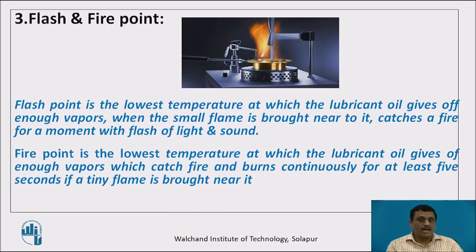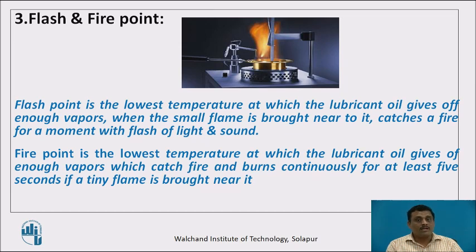The third property is flash and fire point. This property is not related to lubrication but is related to selection of lubricant and safety. The flash point is the lowest temperature at which the lubricant oil gives enough vapors, and when a small flame is brought close, it catches fire for a moment with a sound. The fire point is the temperature at which the formed vapors catch fire continuously. Generally, fire point is more than flash point by 5 to 10 degrees centigrade. Flash point indicates the warning stage — if ignored, the next stage is the fire point.